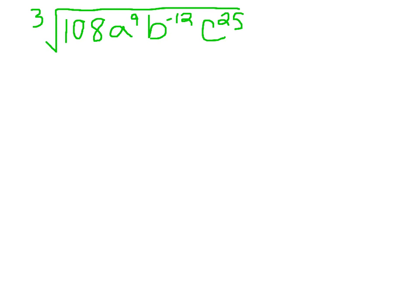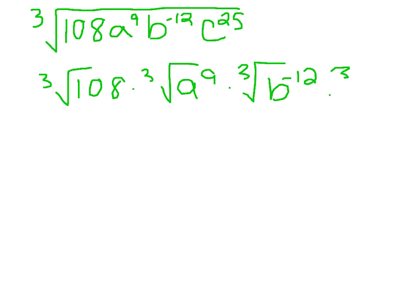Our first step is to separate the radical by using the product rule for radicals. So cube root of 108 times cube root of a to the 9th times cube root of b to the negative 12th times cube root of c to the 25th. And we're going to simplify the radicals by finding the highest perfect cube.